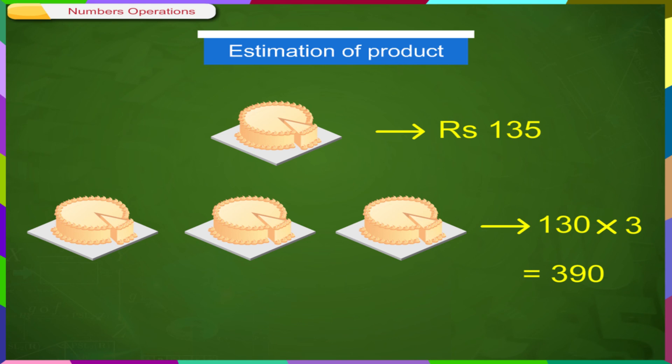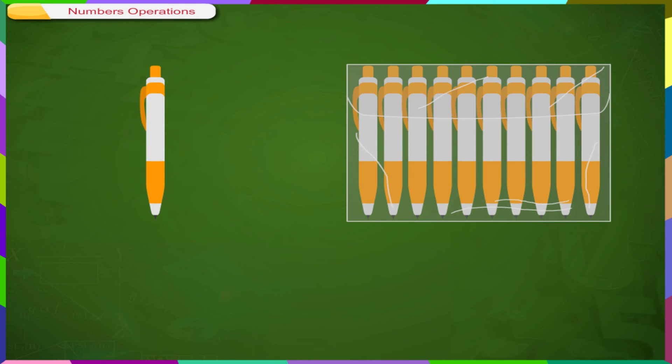Many a times, we estimate the quotient. For example, we want to buy 1 pen from a pack of 10 pens. The pack of 10 pens costs Rs. 775. We estimate 775 as 800 and divide 800 by 10. Rs. 80 will be cost of 1 pen. Thank you.